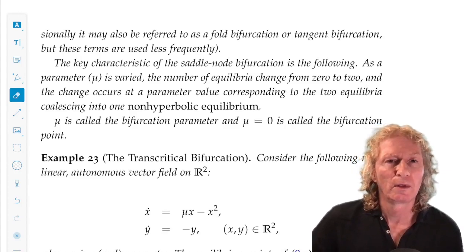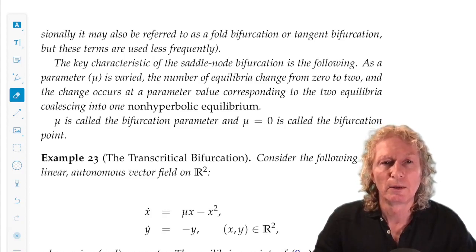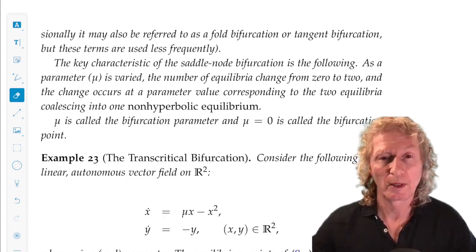All right. That's enough for this example of the saddle node. We have two more examples to look at. So, next time, I'll pick up with the next example, the transcritical bifurcation. So, bye for now.